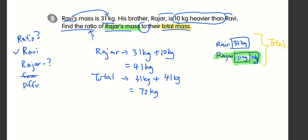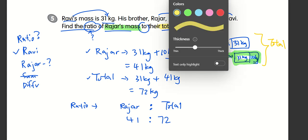Now the ratio that you require is Raja to the total. So I have Raja here and total. That's 41 kilograms to 72 kilograms. Check if I could simplify it. If not, that's the answer. Very quick.